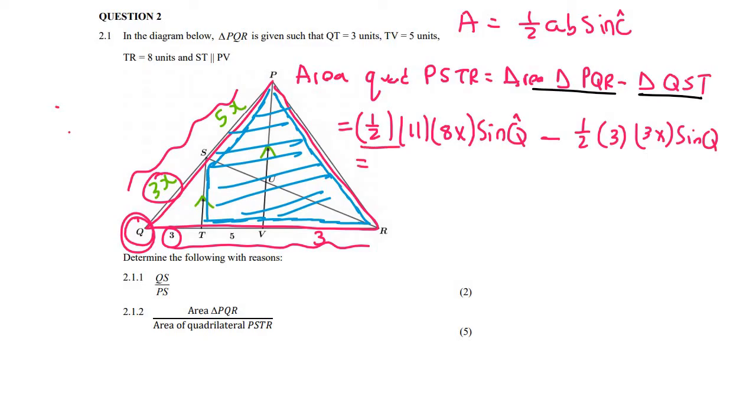Now, you can go multiply all of these numbers together. It's going to give you 44 sin Q. Oh, but there's also an X. 44X sin Q. But now these can be minused from each other because they both have a sin Q. And so that can become 39.5X sin Q. So that is the area of the blue triangle or the blue quadrilateral.